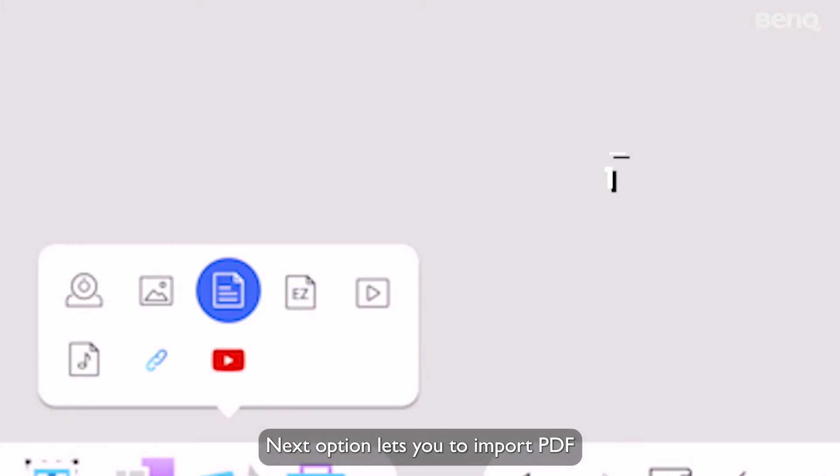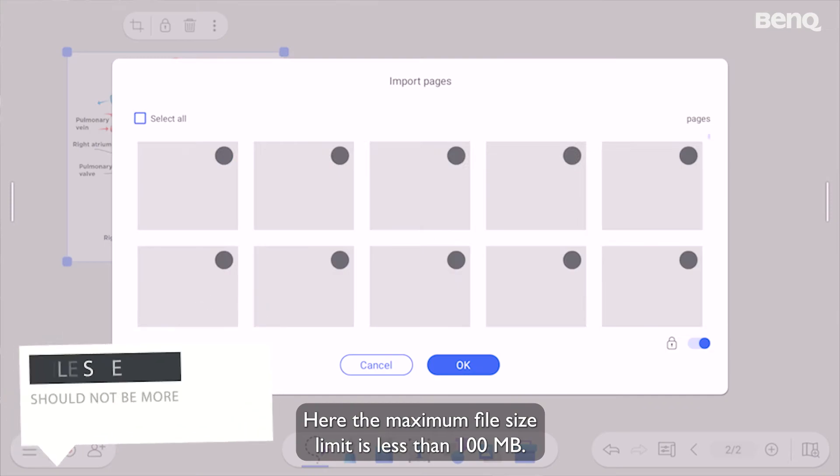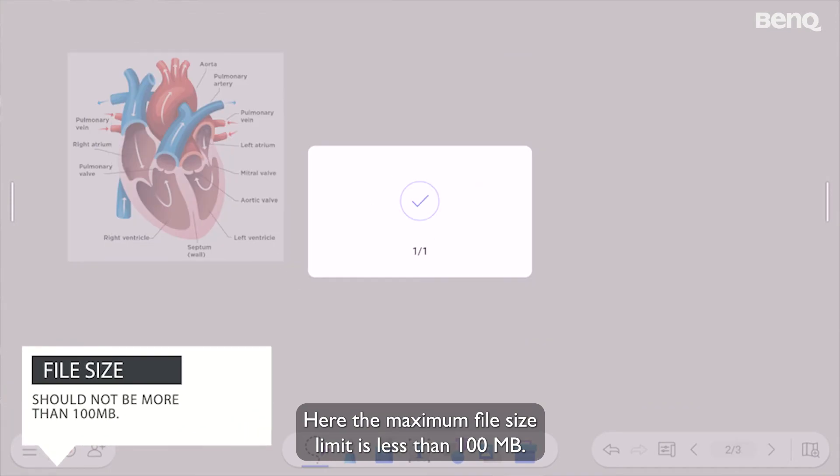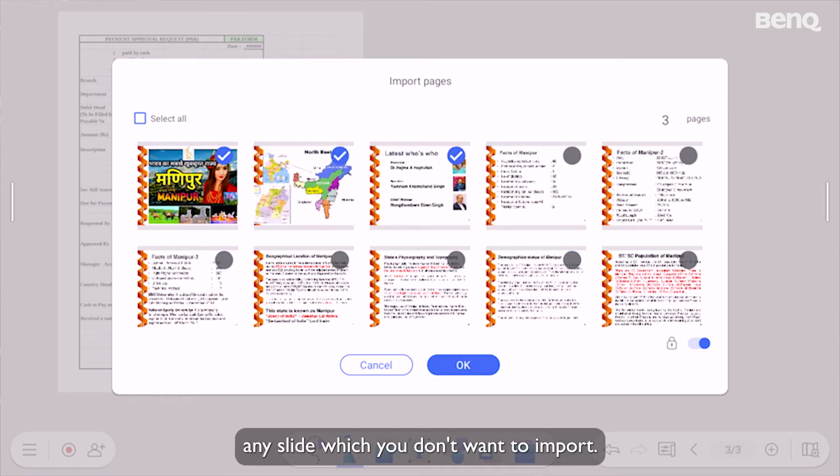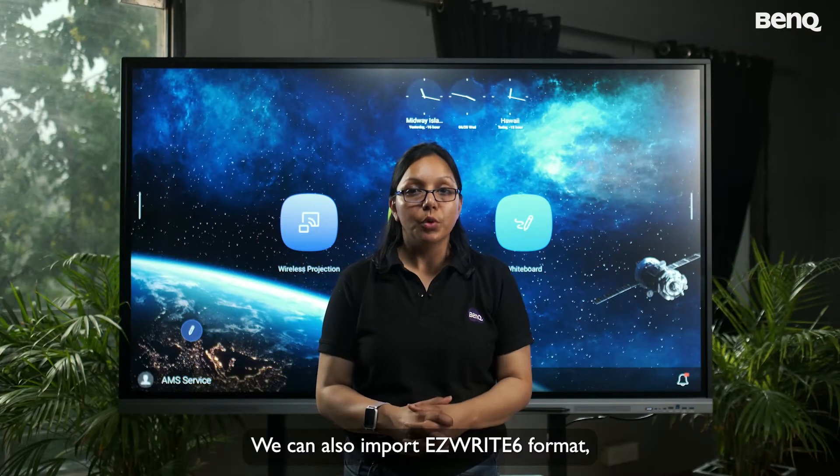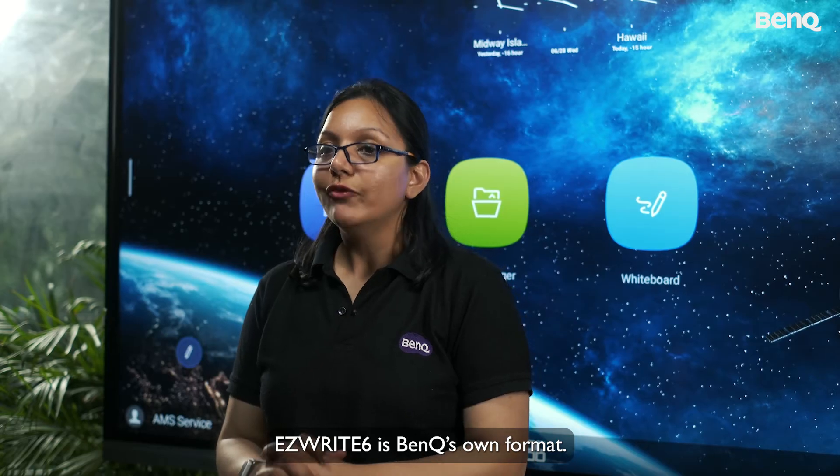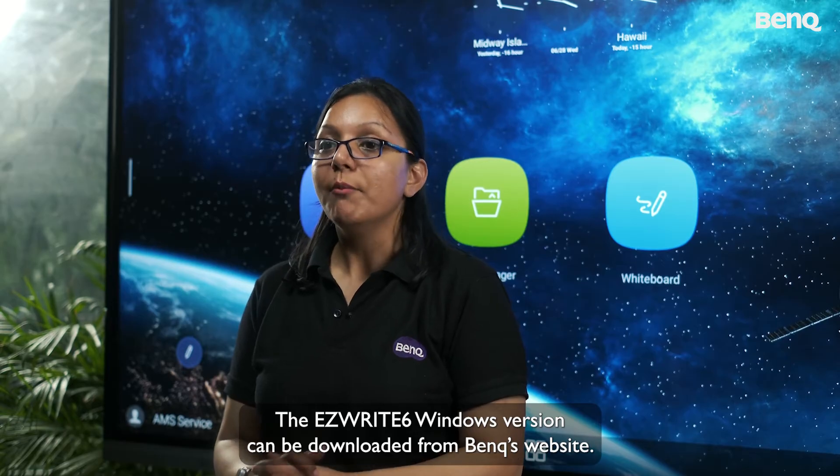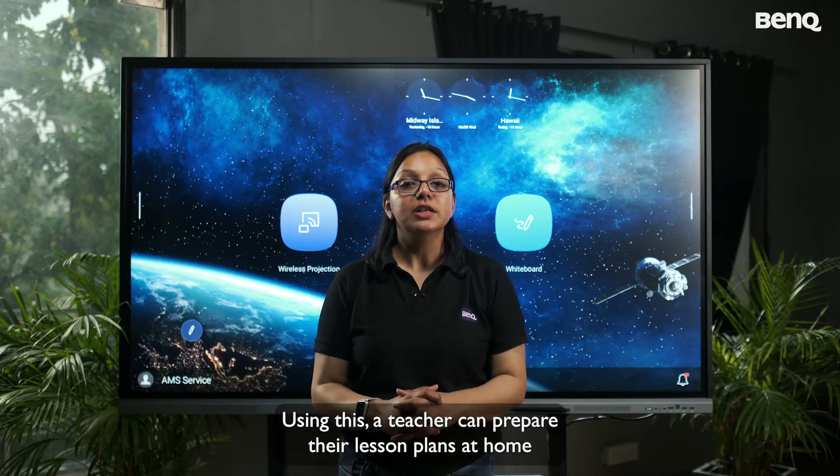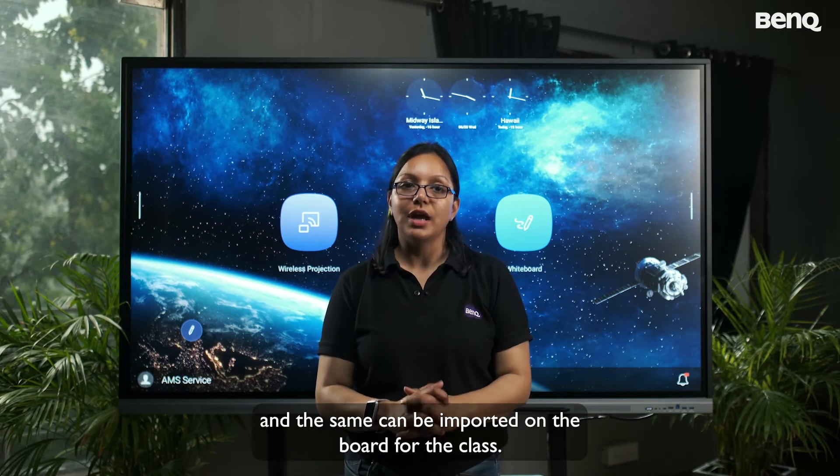Next option lets you to import PDF, PPT, DOC, and Excel file formats. Here, the maximum file size limit is less than 100 MB. These are all the PDF slides, and you can deselect any slide, which you don't want to import. We can also import EasyDroid 6 format. EasyDroid 6 is BenQ's own format. The EasyDroid 6 Windows version can be downloaded from BenQ's website. Using this, a teacher can prepare their lesson plans at home, and the same can be imported on the board for the class.